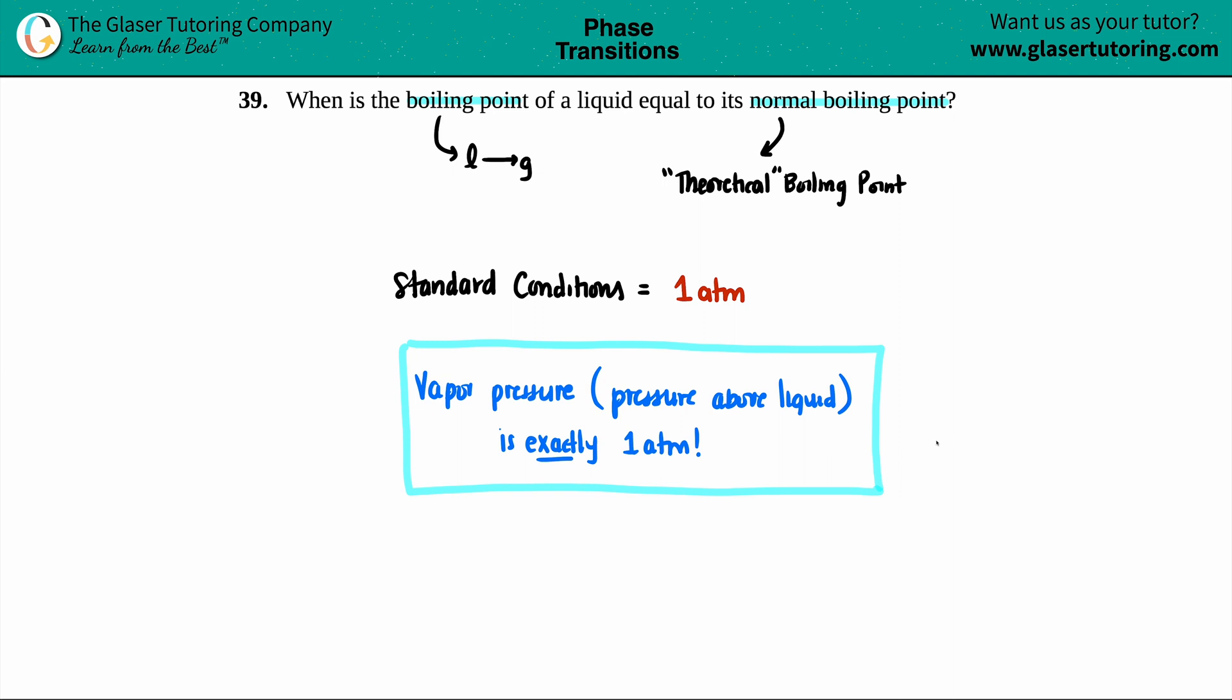They might ask you this on a multiple choice question where they just tell you that it's a normal boiling point. So you just have to know that a normal boiling point will always have a pressure value of one ATM.